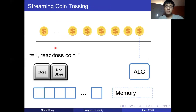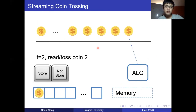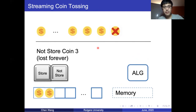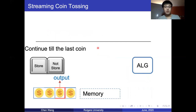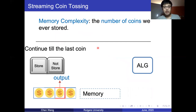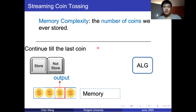For a concrete illustration: the algorithm reads a stream of coins, stores the first coin, also decides to store the second coin, but decides not to store the third coin — so that coin is lost forever. After reading the last coin, it outputs a coin from stored memory. We define the memory complexity as the number of coins ever stored in this model, also called space complexity. We assume the number of bits to store each coin is large, so we only care about the number of coins stored as the memory complexity.